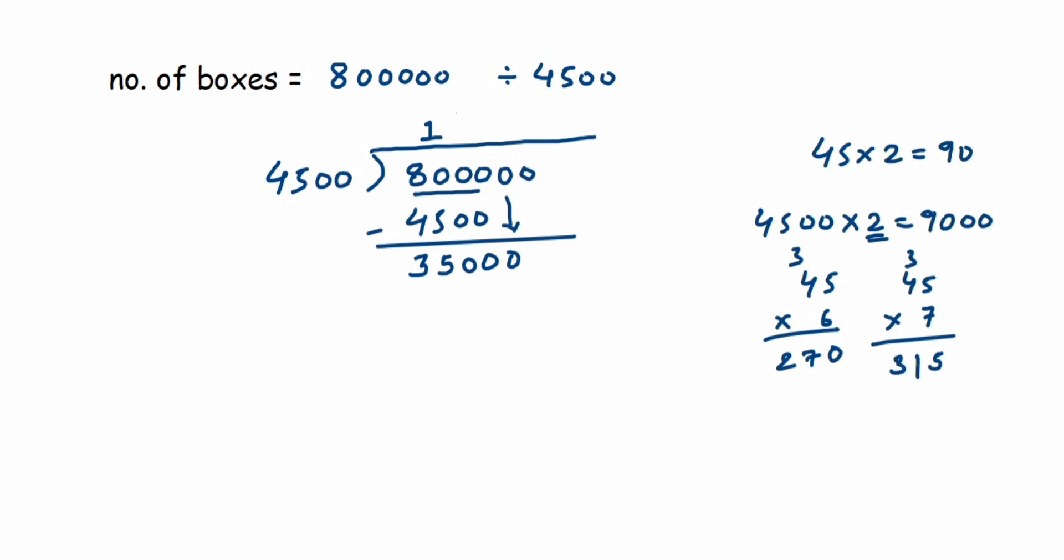You have to just put these two zeros here. So instead of taking the zeros and then the calculation becomes much bigger, to avoid that I have just multiplied with 45 and then I checked it. So 4500 times 7 is 31,500.